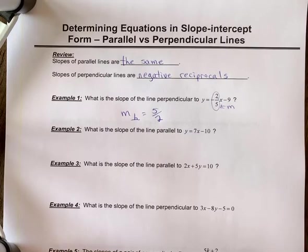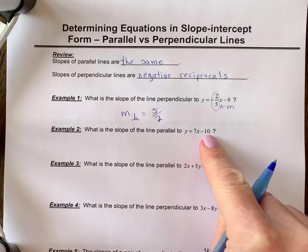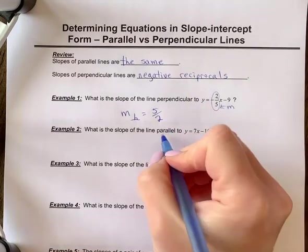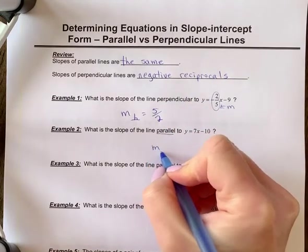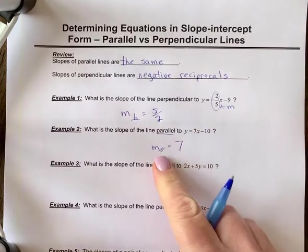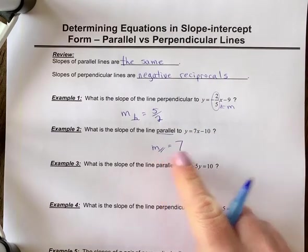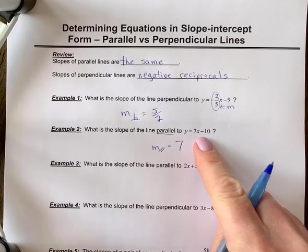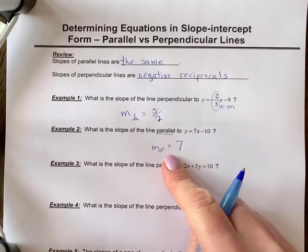Example 2, what is the slope of the line parallel to y equals 7x minus 10? So if it's parallel, the slope that is parallel, we use these parallel line symbols, is the same slope, so it's 7. It's important you use these symbols. You don't want to just say m equals 7, referring to this line. The parallel line has the same slope as well.